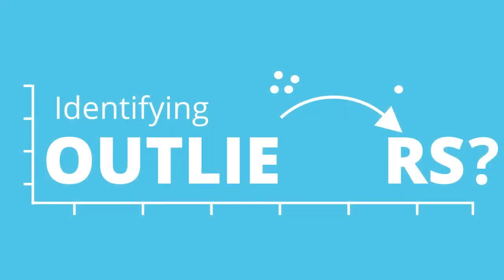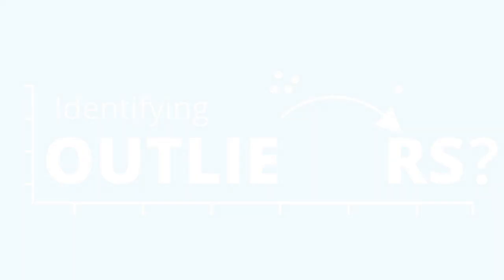There are several ways that analysts try to identify outliers more methodically rather than simply eyeballing them. One way is a box and whisker plot.